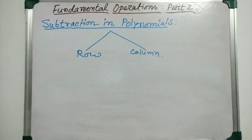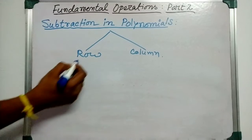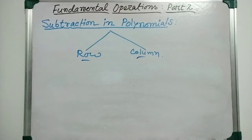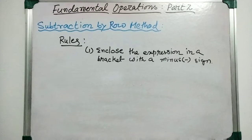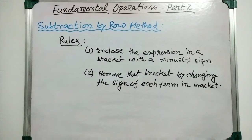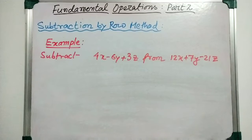By both methods we got the same result: 4a² minus 2bc. For subtraction of polynomials, there are also two methods: row method and column method. For the subtraction by row method, follow two steps: first, enclose the expression to be subtracted in brackets with a minus sign prefixed; second, remove the bracket by changing the sign of each term inside.